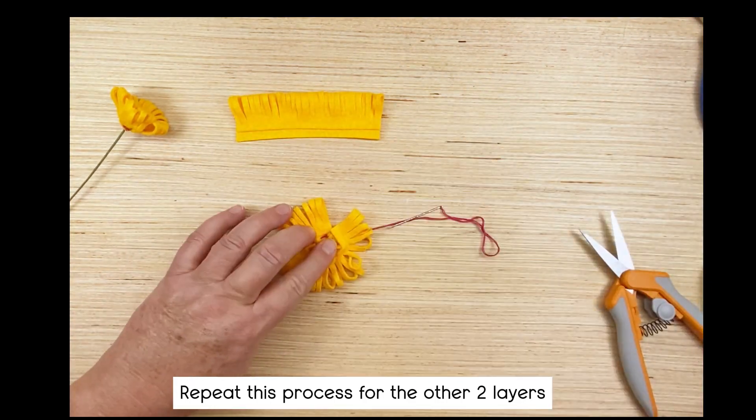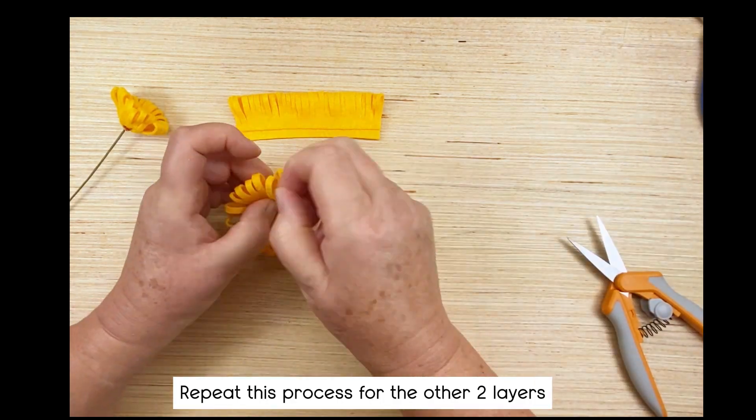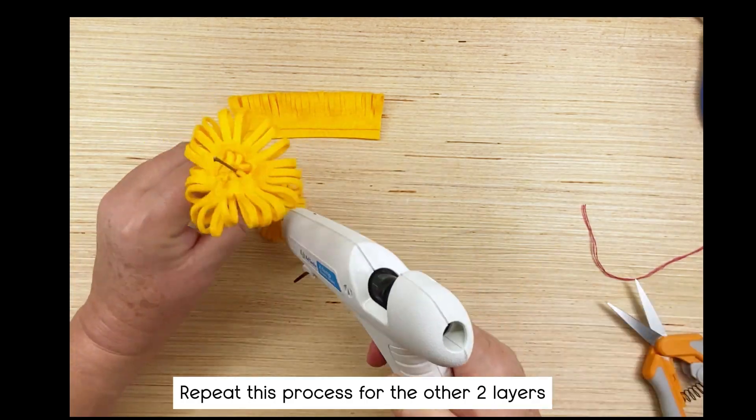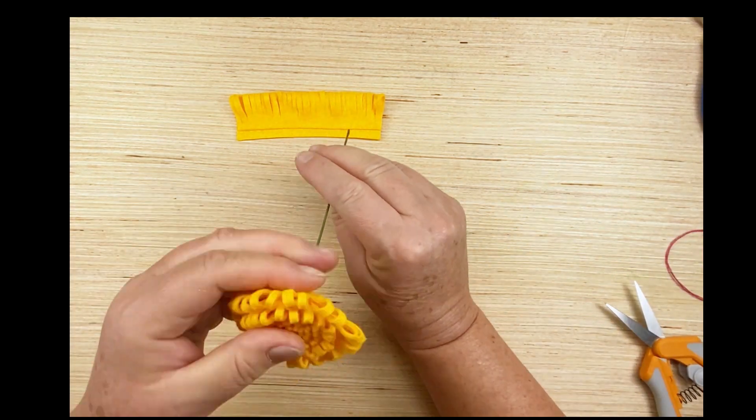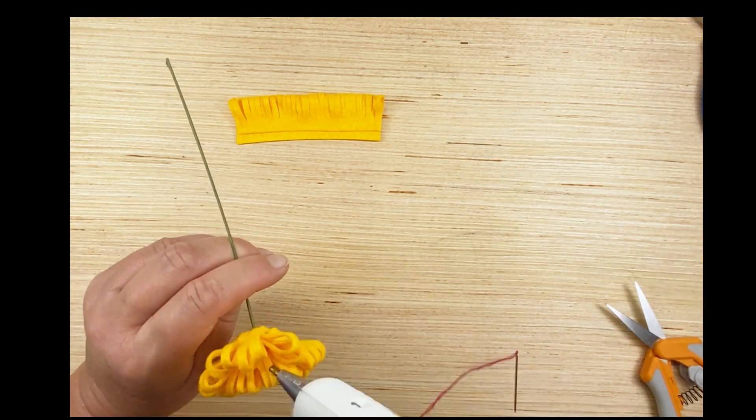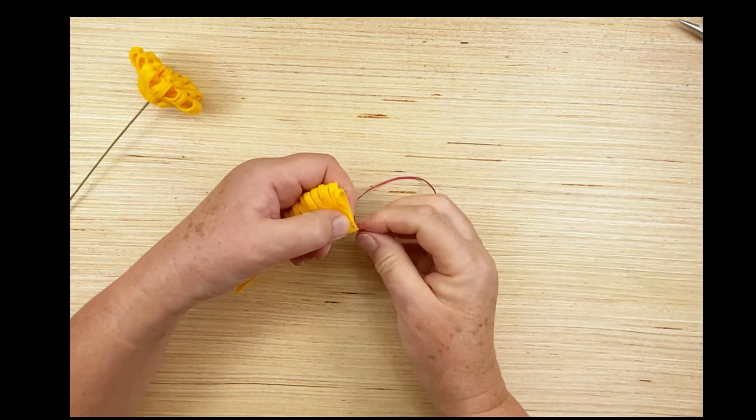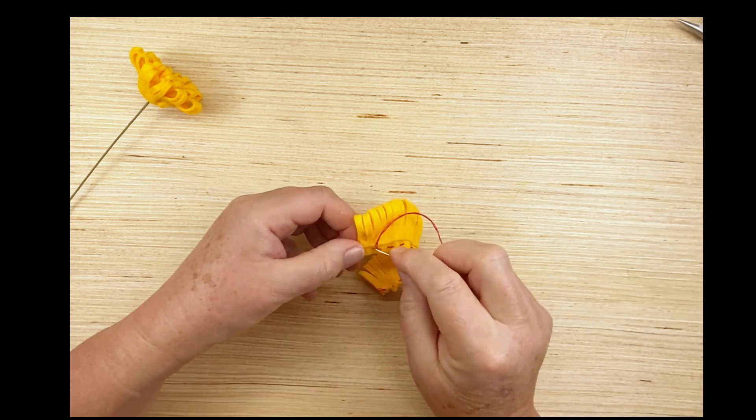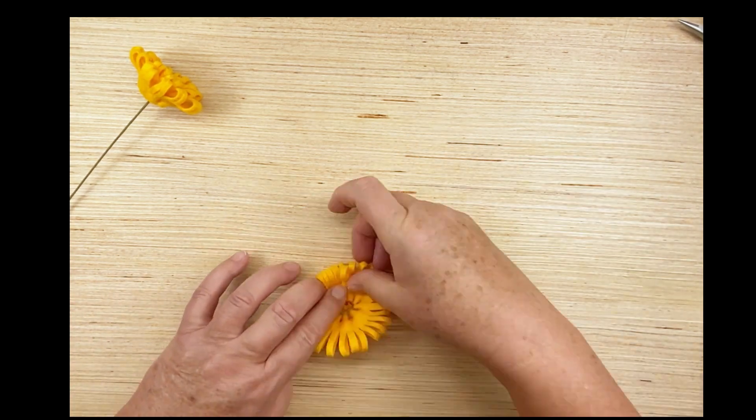I do this version of the pom-pom chrysanthemum because the original that everybody seems to do involves the long fringe and I always ended up in a mess doing that. So I came up with using these smaller shorter fringes and it seems to work better for me. Let me know what you guys think. And like I say, nobody's going to see this thread, nobody's going to know that it's there, only you and me.